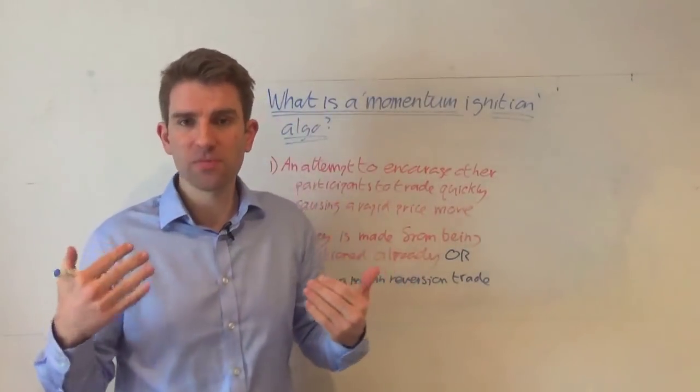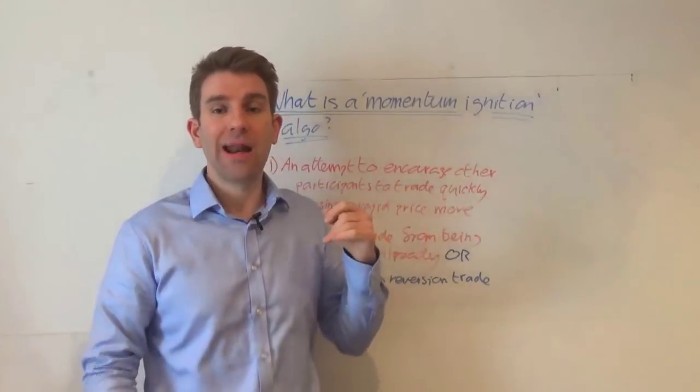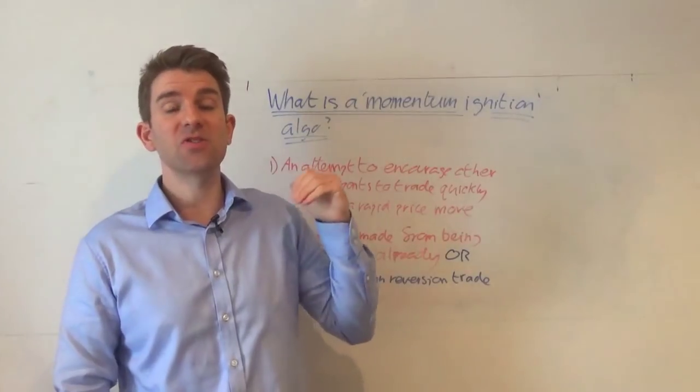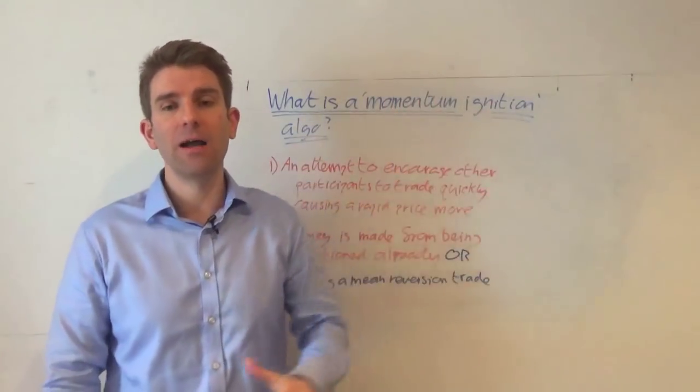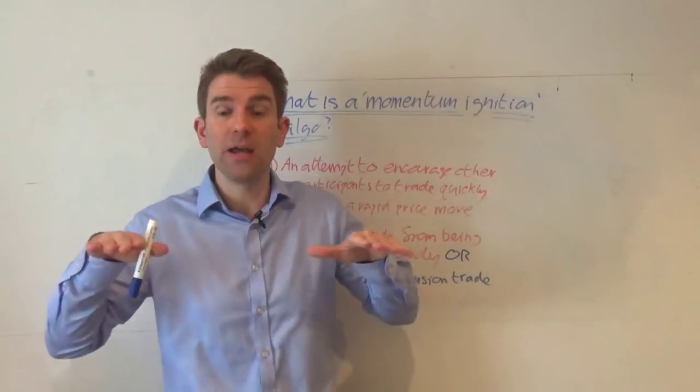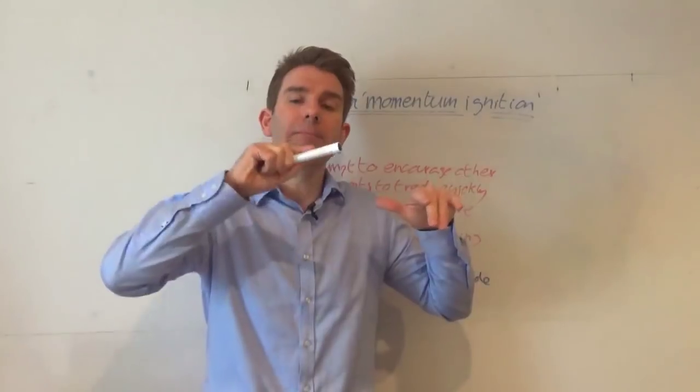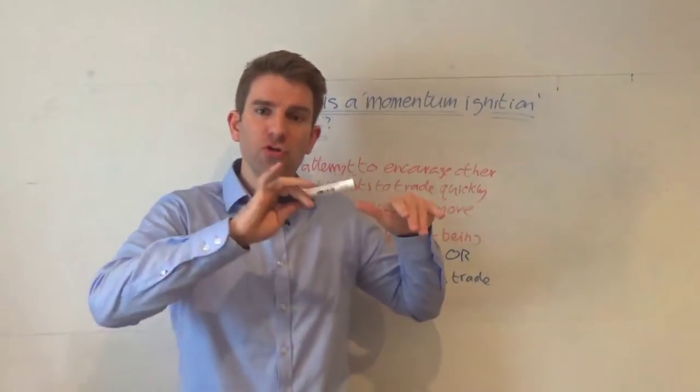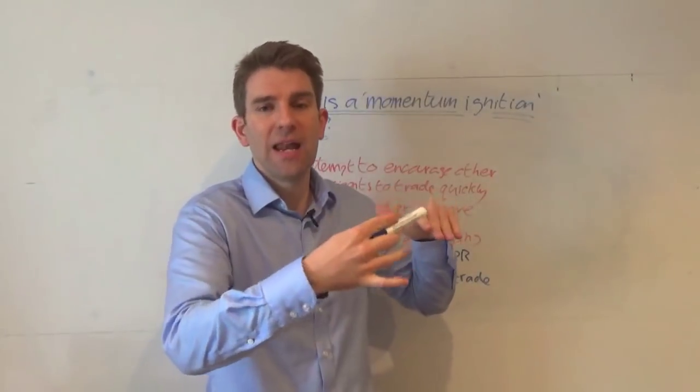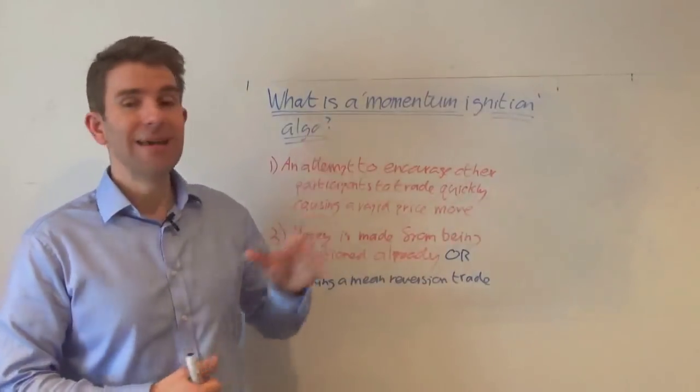So if we put it in simple terms, let's say we have a high and we have an algo which wants to create momentum ignition by creating some buy stops above that high. This is very simplified, but let's assume that for this example they would then quickly buy a lot of stock or a lot of futures contracts or whatever it may be to force the price through that level.